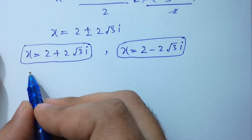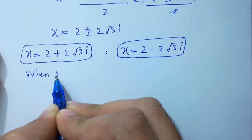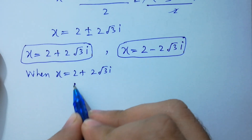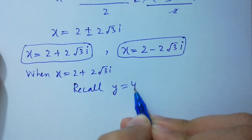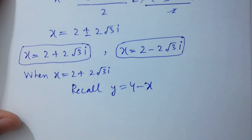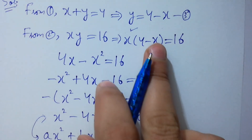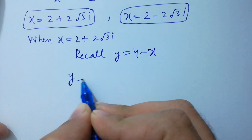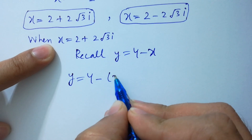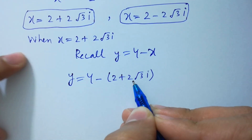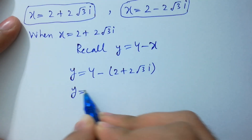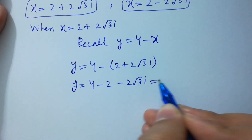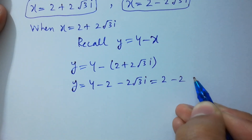So x equal to 2 plus 2 square root of 3 i, or x equal to 2 minus 2 square root of 3 i. When x equal to 2 plus 2 square root of 3 i, recall y equal to 4 minus x, which is the third equation. So y equal to 4 minus (2 plus 2 square root of 3 i), which gives y equal to 2 minus 2 square root of 3 i.